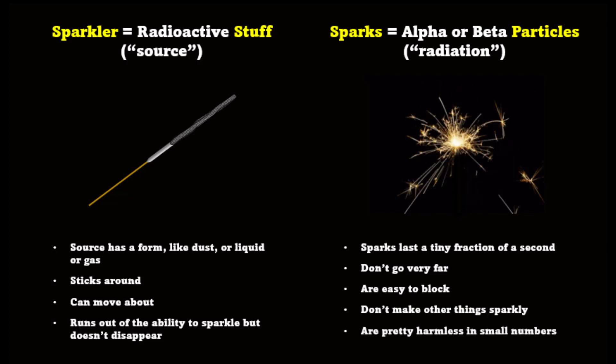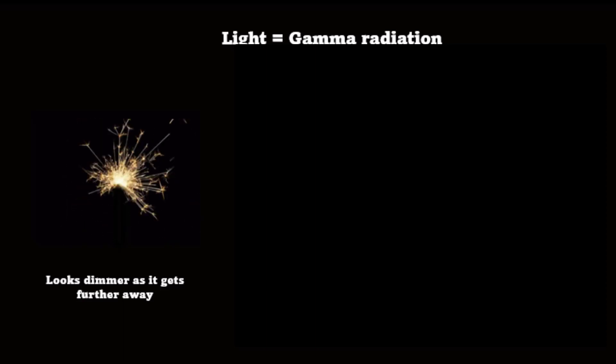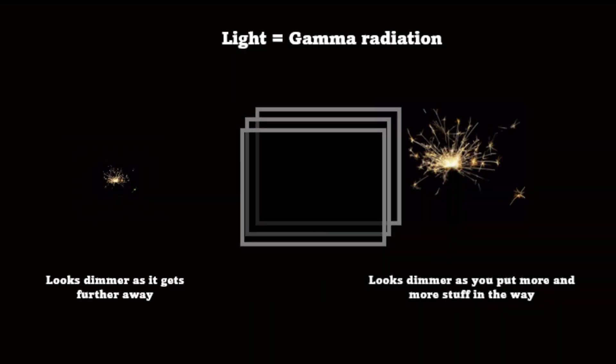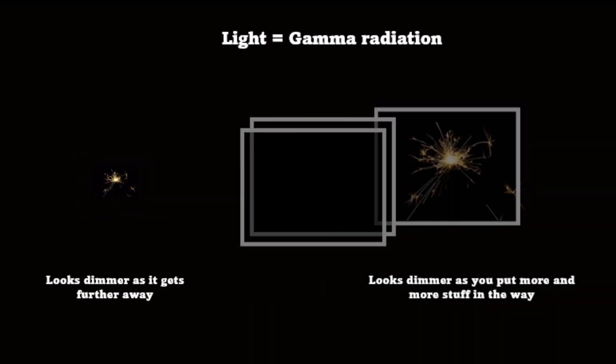Just like radiation, the sparks are pretty harmless unless you let a lot of them hit you. Gamma radiation is a bit like the light from the sparkler. It gets dimmer the further away it is, and it gets dimmer the more stuff you put in the way.